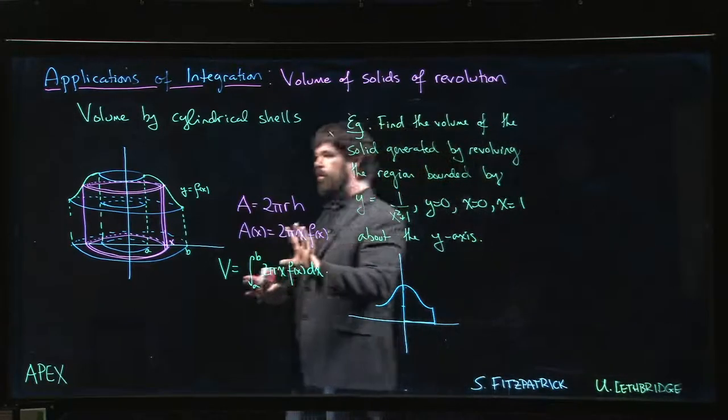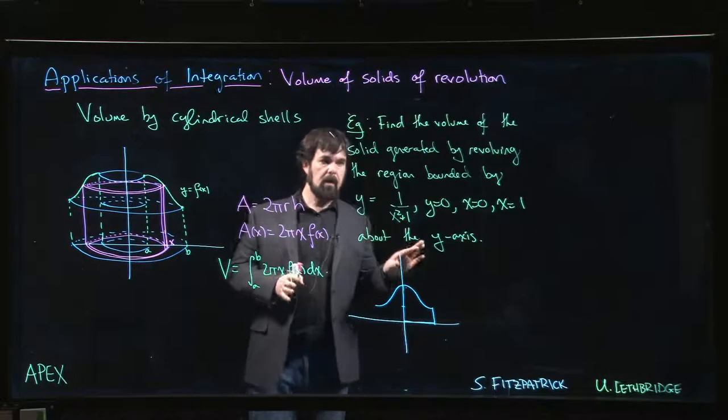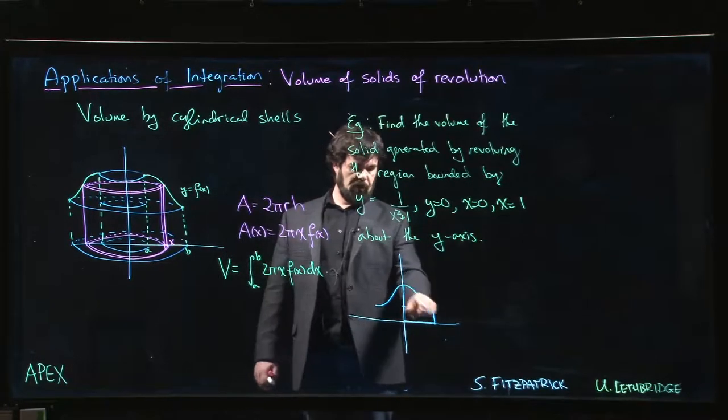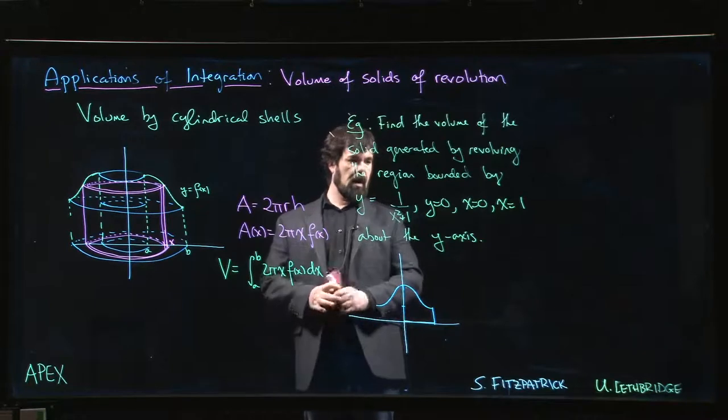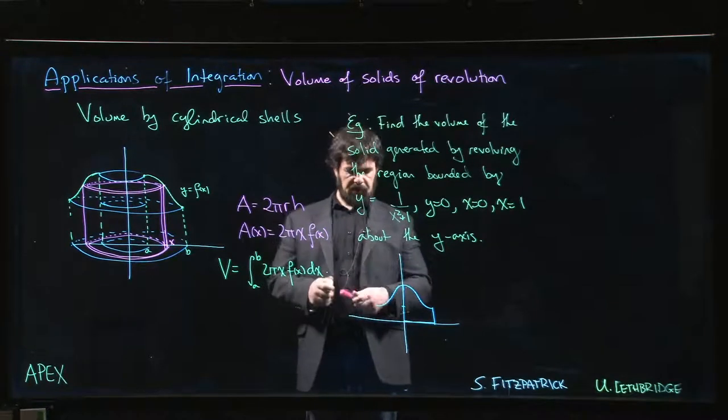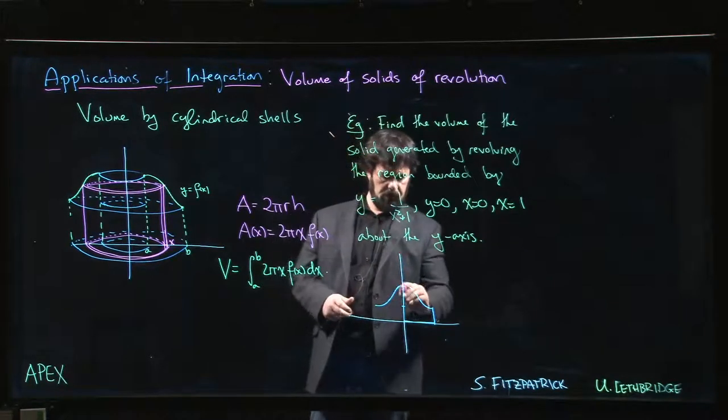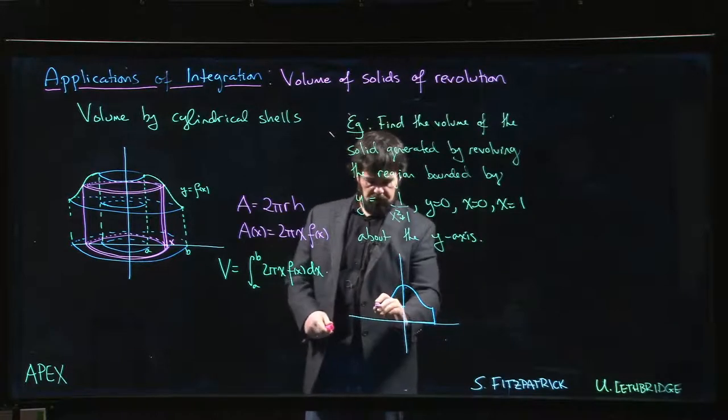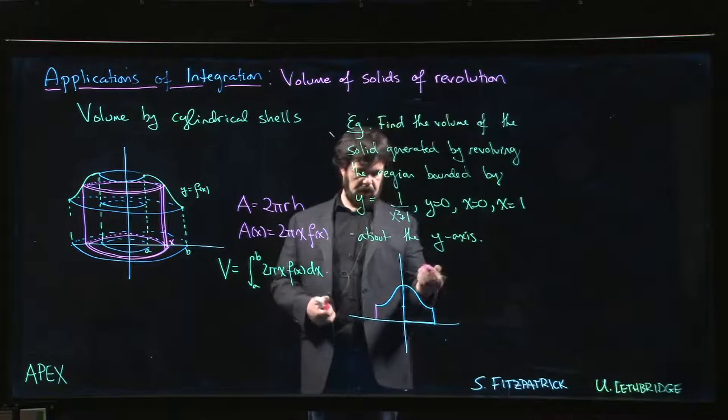Here's our first example using the shell method to compute a volume. We have y equals one over x squared plus one, which is this sort of bell shape. We're going to revolve it about the y-axis, so this is our region. We're going to revolve about the y-axis, so we're going to get this sort of shape here.